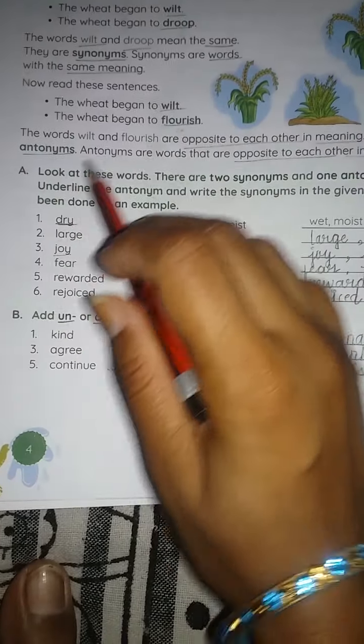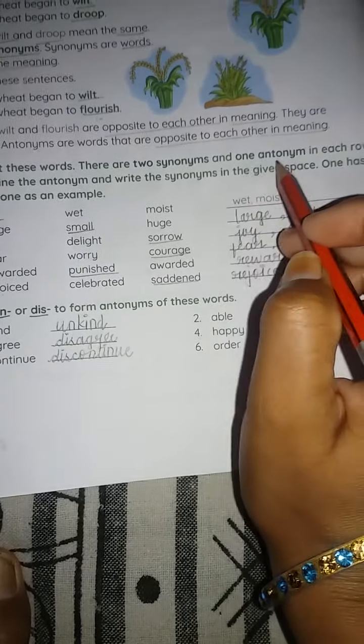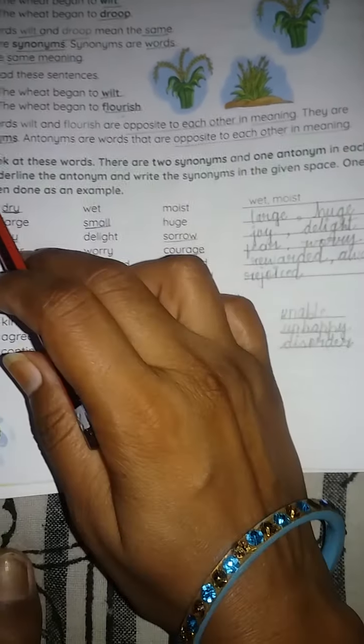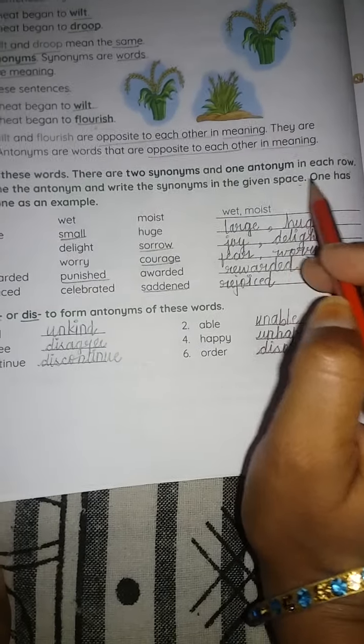Now let's do this exercise A. Look at these words. There are two synonyms and one antonym in each row. So underline the antonyms and write the synonyms in the given space. One has been done as an example.